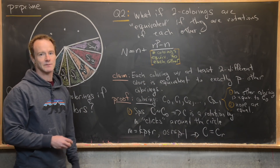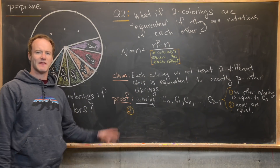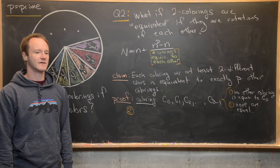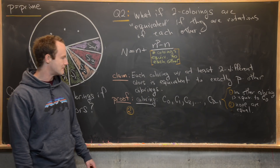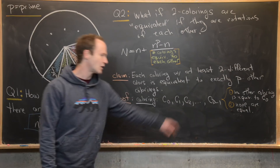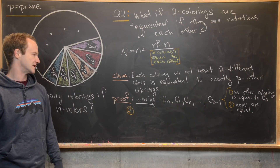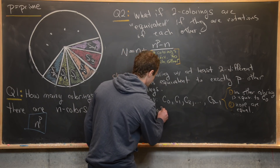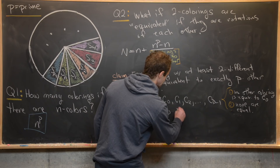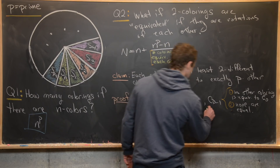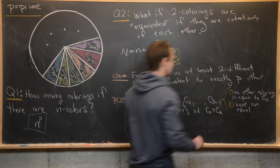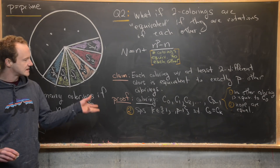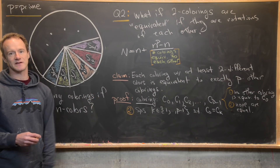Now for the second part — showing none of these are equal to each other — we proceed by contradiction. Without loss of generality, assume C0 equals some other coloring on this list. Suppose there exists K in the set 1 up to P minus 1 such that C0 equals CK, meaning rotating C0 onto CK gives exactly the same thing.